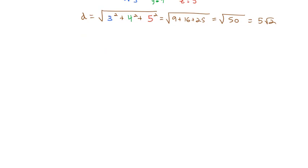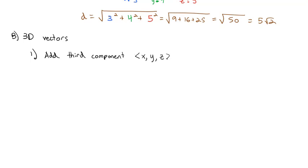That was a brief introduction to graphing in 3D, because our main interest is in 3D vectors that go through the space. Basically, 3D vectors are very similar to 2D vectors — we just add the third component to get x, y, z. Or we could add a third unit vector, which is the vector k in our i, j, k vectors, where k is equal to the vector (0, 0, 1), giving us 1 unit in the z direction.